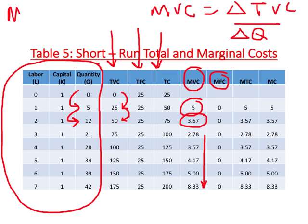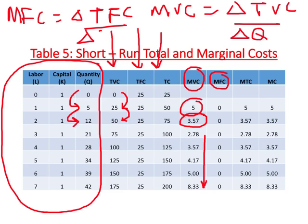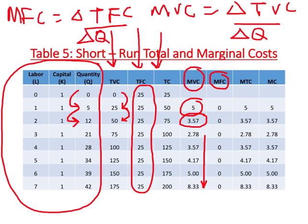Now let us calculate MFC. MFC is defined as change in TFC divided by change in Q. TFC is a fixed cost of production — this number does not change at all. So by definition, change in TFC is zero, and if you divide zero by any number, what you get is zero. Therefore, marginal fixed cost is exactly zero for all levels of output.